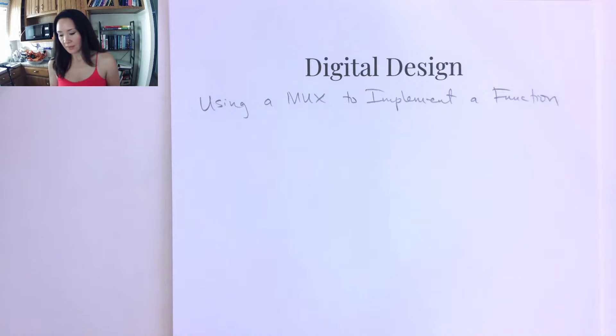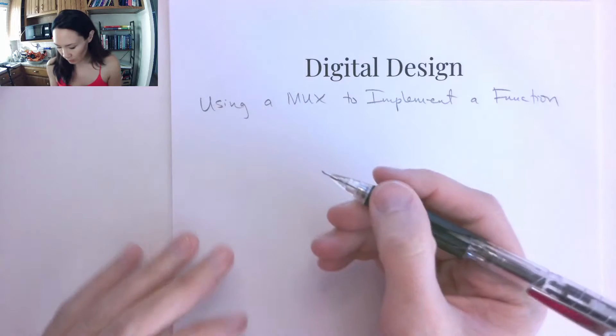Hi students. Now we've seen the basic multiplexers, the 2 to 1, the 4 to 1, and the 8 to 1 multiplexer. So let me show you how we use multiplexers to implement another function. So let's do an example problem.